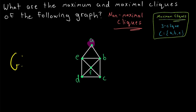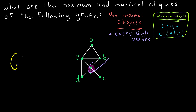Thus, since every vertex in this graph is incident with at least one edge, we know that every single vertex in this graph is itself a non-maximal clique. Because every single vertex is a clique, and it can be extended to include one of its adjacent vertices to make a larger clique — a clique with two vertices. We'll be able to apply similar logic to the edges in this graph.